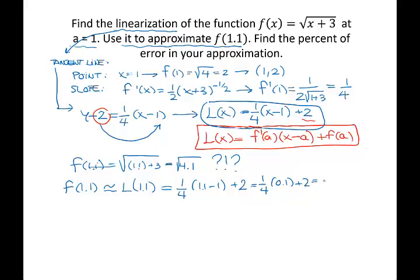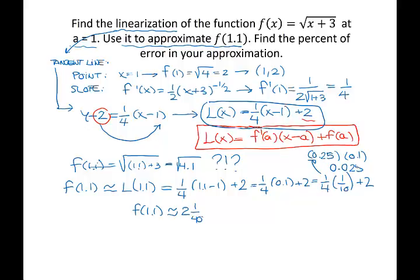If you're a fraction lover: one fourth of one tenth plus 2 gives one fortieth, so the approximation is two and one fortieth. If you prefer decimals: 0.25 times 0.1 equals 0.025, then add 2. Either way, f of 1.1 is approximately equal to 2.025 — and that was not difficult. It's about 2 like I expected, but now I know how much above 2.